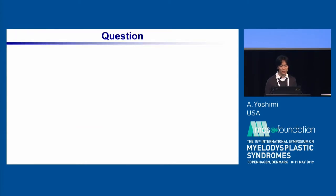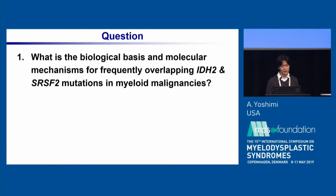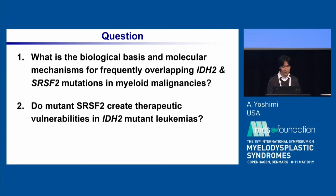We have the following two questions from these observations. First, what is the biological basis and molecular mechanism for the frequently overlapping IDH2 and SRSF2 mutations in myeloid leukemia? And second, do mutant SRSF2 create therapeutic vulnerabilities in IDH2 mutant leukemias?